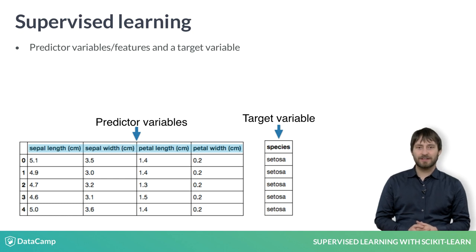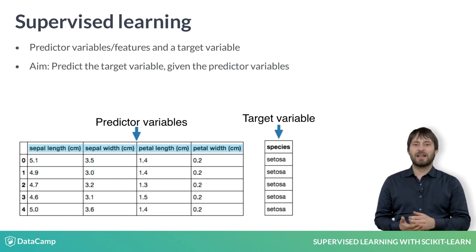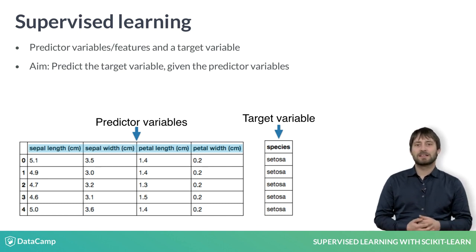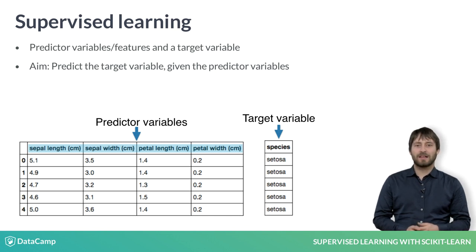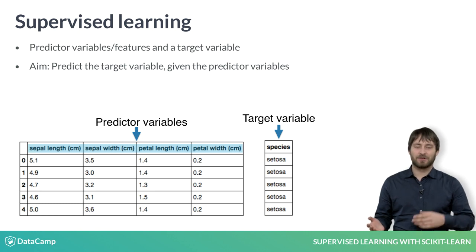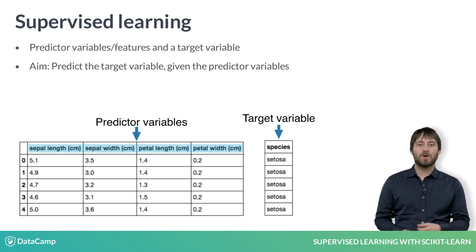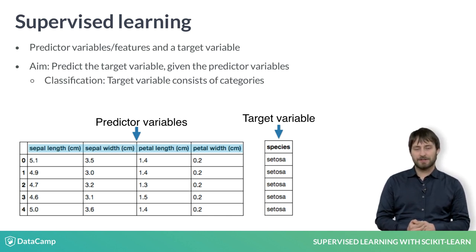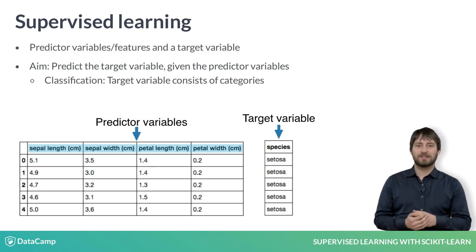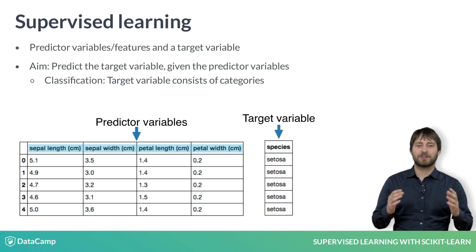The aim of supervised learning is to build a model that is able to predict the target variable — here the particular species of the flower — given the predictive variables, here the physical measurements. If the target variable consists of categories like click or no click, spam or not spam, or different species of flowers, we call the learning task classification. Alternatively, if the target is a continuously varying variable, for example the price of a house, it's a regression task.